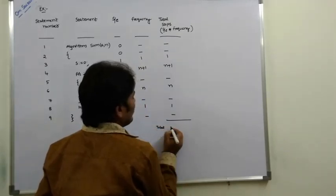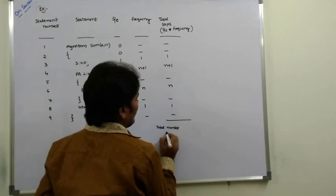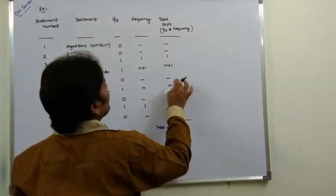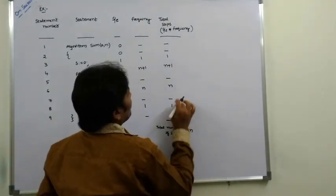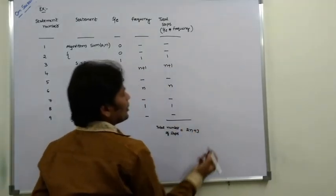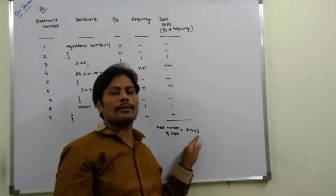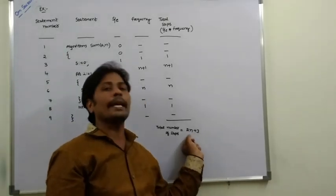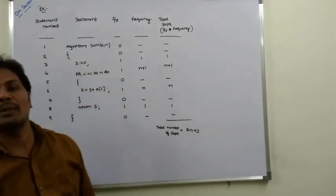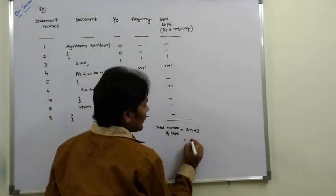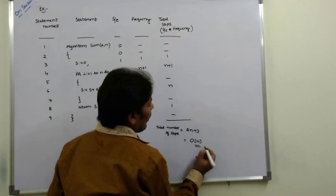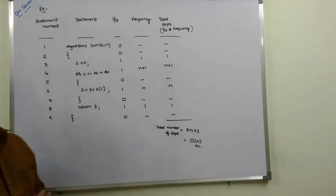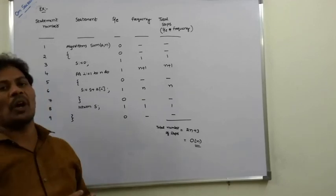The total number of steps equals n + n + 1 + 1 + 1 = 2n + 3. Here 3 is constant and n is linear. Among constant and linear, the upper bound is n (linear), so the time complexity is O(n). This is how we find the time complexity using the frequency count or step count method.